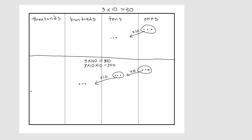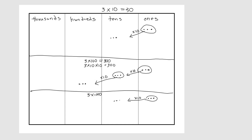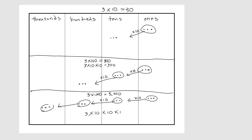If we want to do three times a thousand, we'd start with our three ones and move them once, again, and a third time, ending up with three thousand. This is the same as three times ten, times ten, times ten — we multiplied by ten three times.